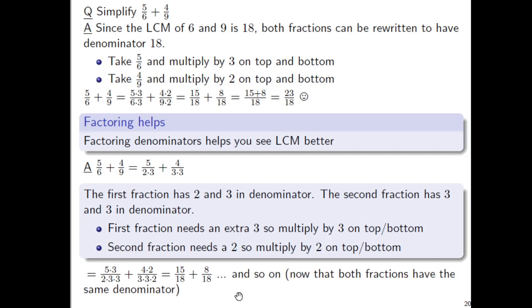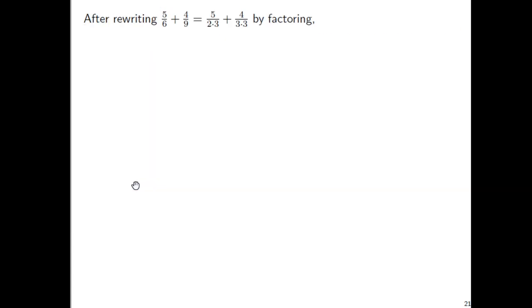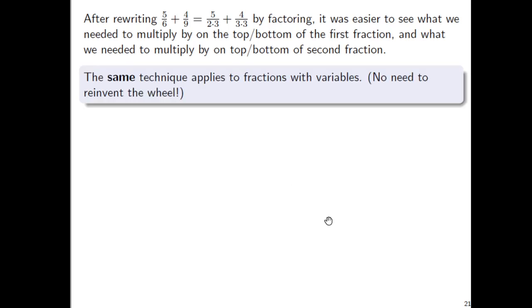The whole point is that factoring denominators lets you see the LCM more clearly. For plain-number fractions this may seem like overkill, but this process works great for fractions with variables as well. The same technique applies — so let's take a look. We'll simplify 3 over (x²−16) plus x over (x²−5x+4).